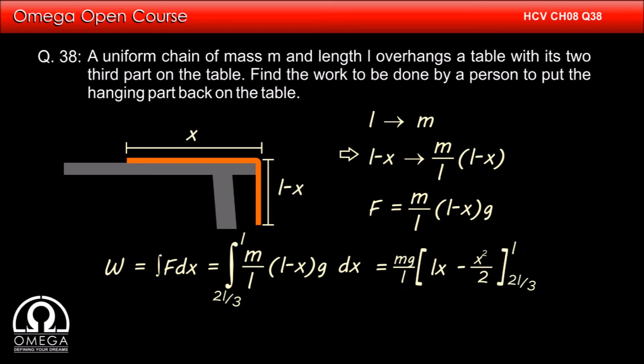Integrating, we get mg by L times Lx minus x squared by 2. Putting the limits, we get mg by L times L squared minus L squared by 2 minus 2L squared by 3 minus 4L squared by 18.